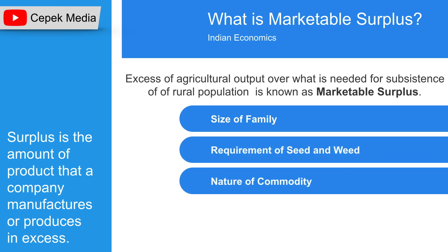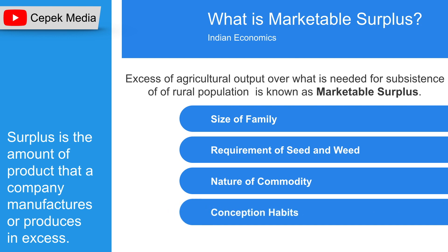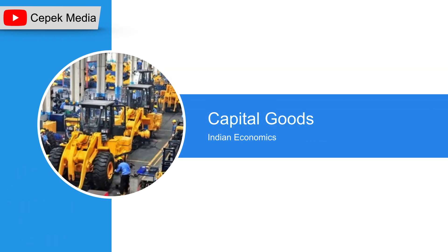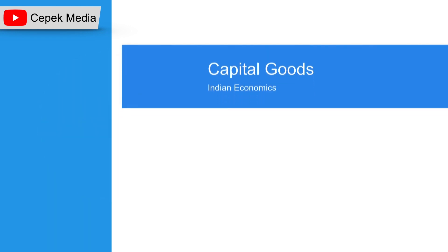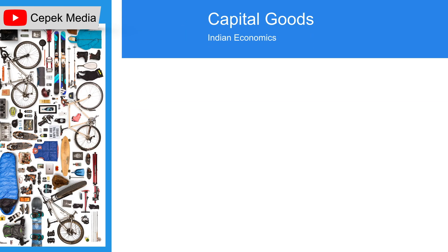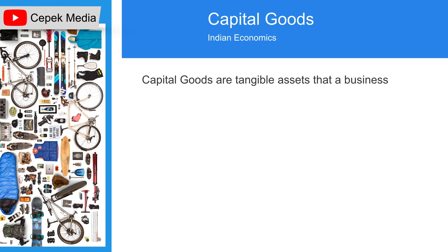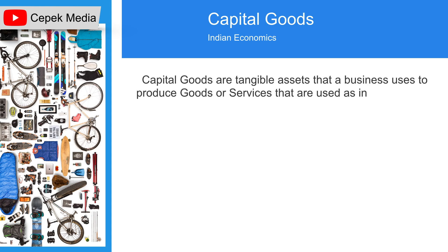In this slide we are going to learn about capital goods. Capital goods are tangible assets that a business uses to produce goods or services that are used as inputs for other businesses to produce consumer goods.